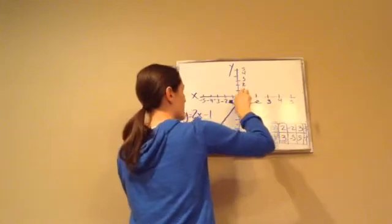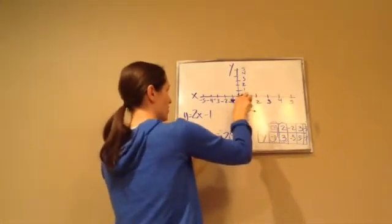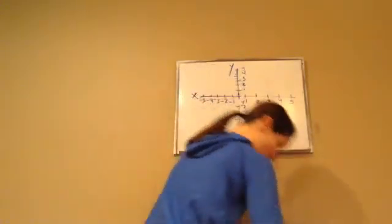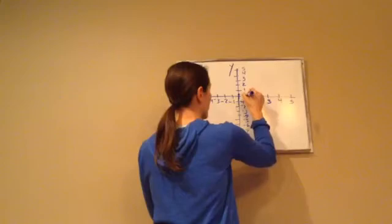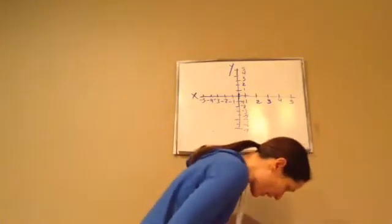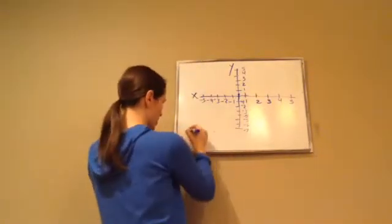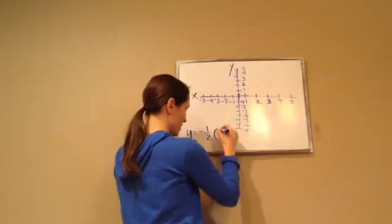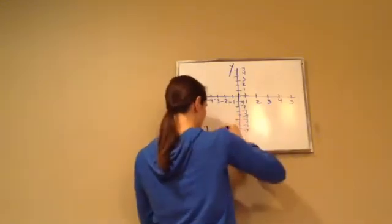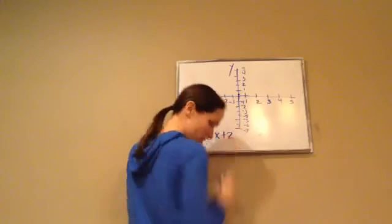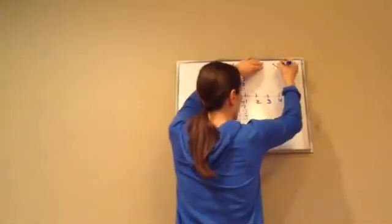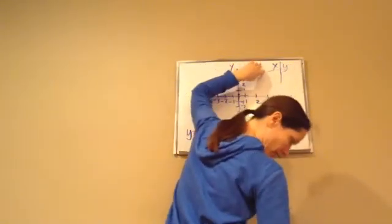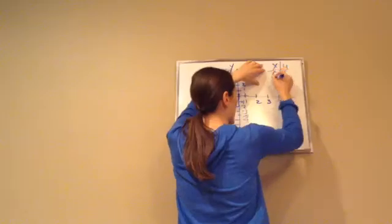Let's try another one. I'm going to reuse my graph. The next equation is y equals negative one-half x plus 2. Again, they give me some x values, and I'll write them in my x-y chart. They give me 0, 2, and negative 2 for the x's, and I need to figure out the y values.